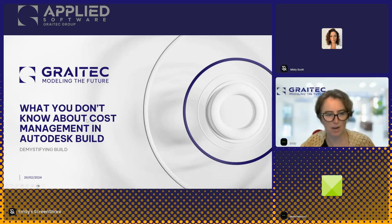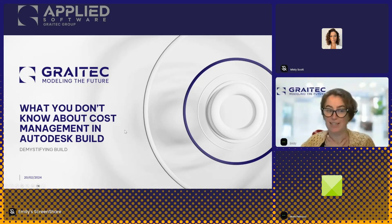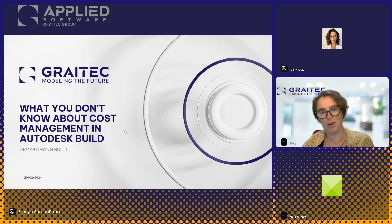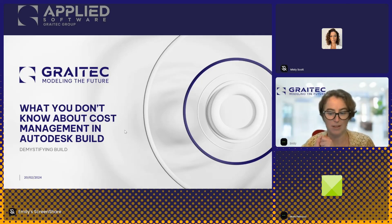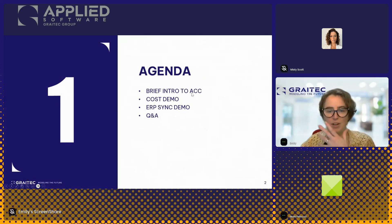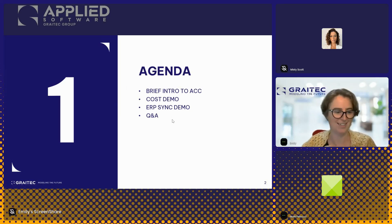We're going to start today by talking about what Cost is in the Build package in the ACC. I'm going to do my version of demystification — not high level, I'm going to get into the granular bits. We're going to start a project, talk about project templates, and I'm hoping to really allow everybody to see the real process. We'll have a brief intro, then a demo, a chat about ERP sync, and hopefully some time for Q&A.